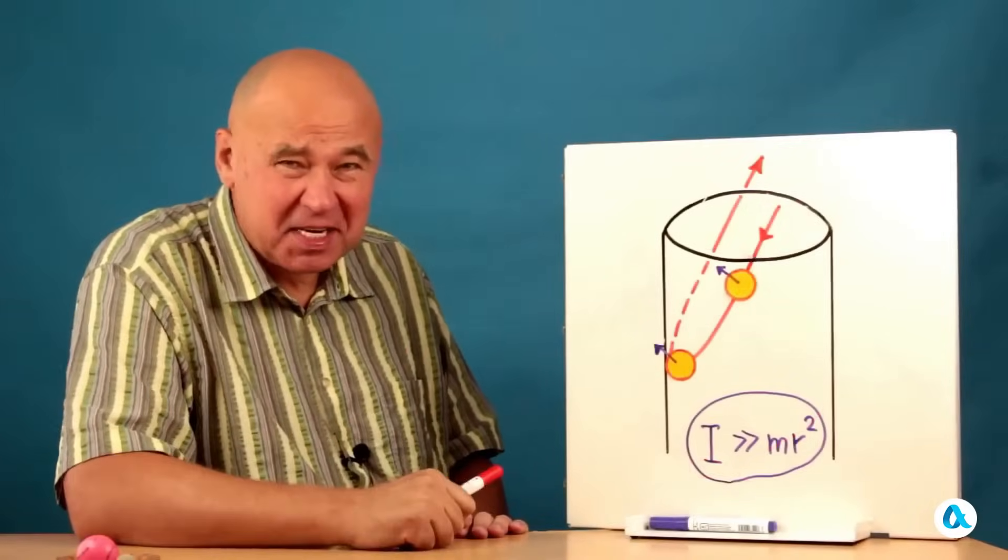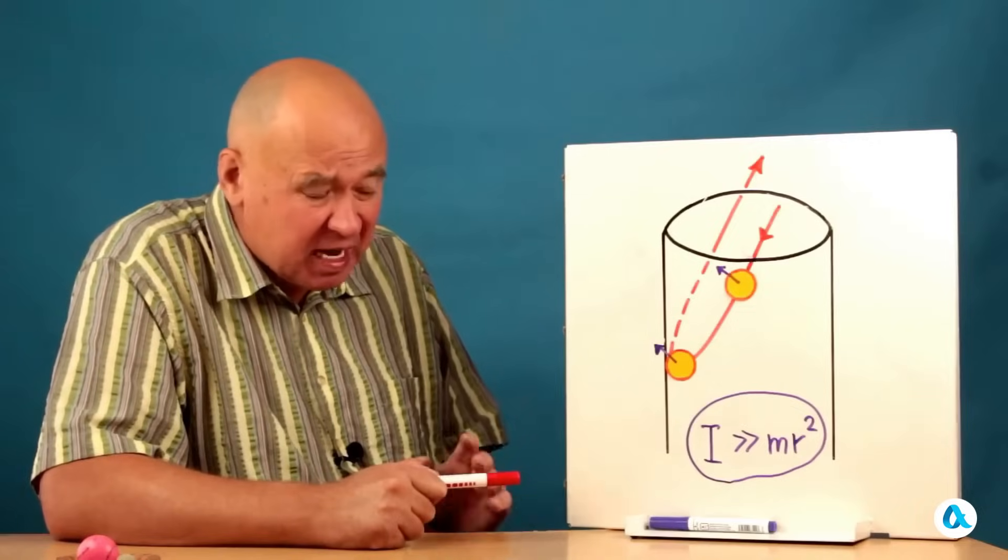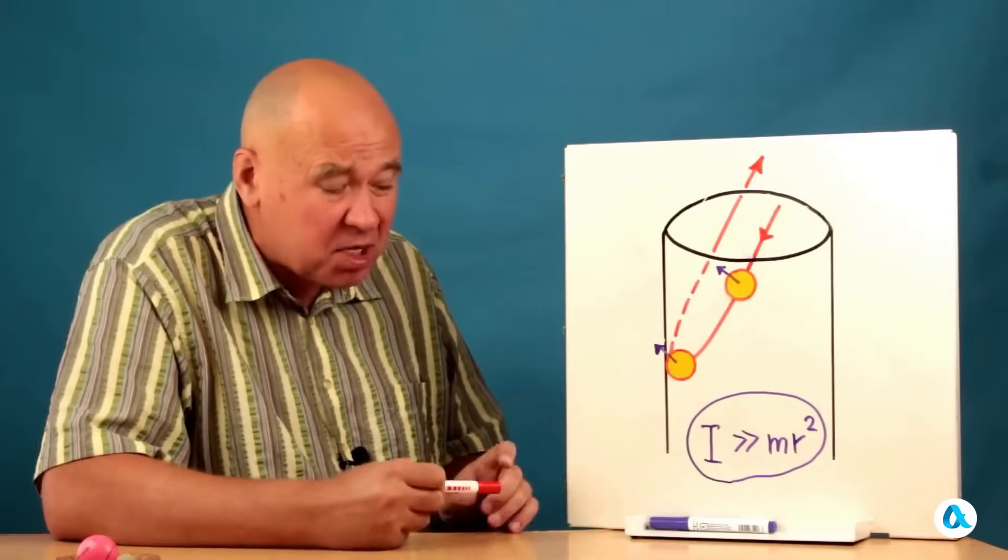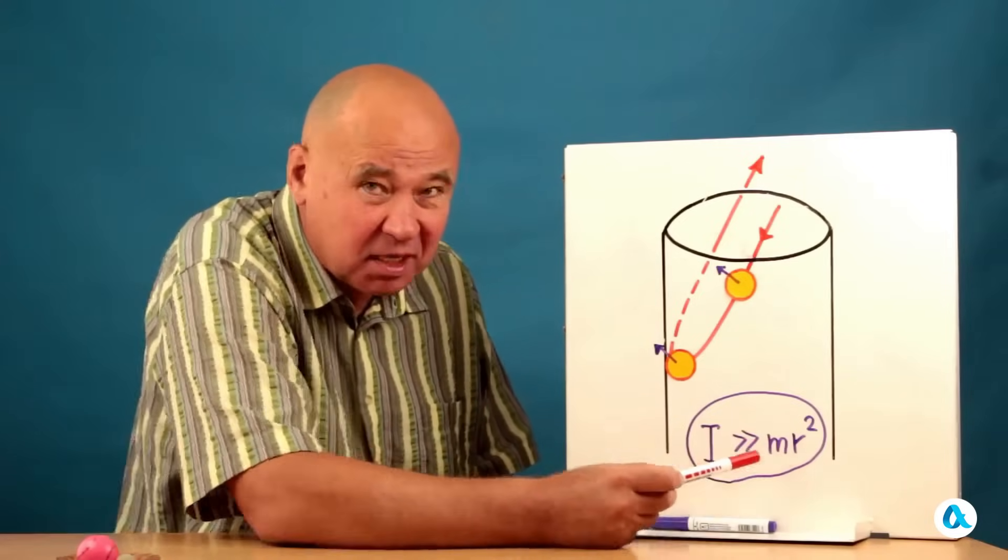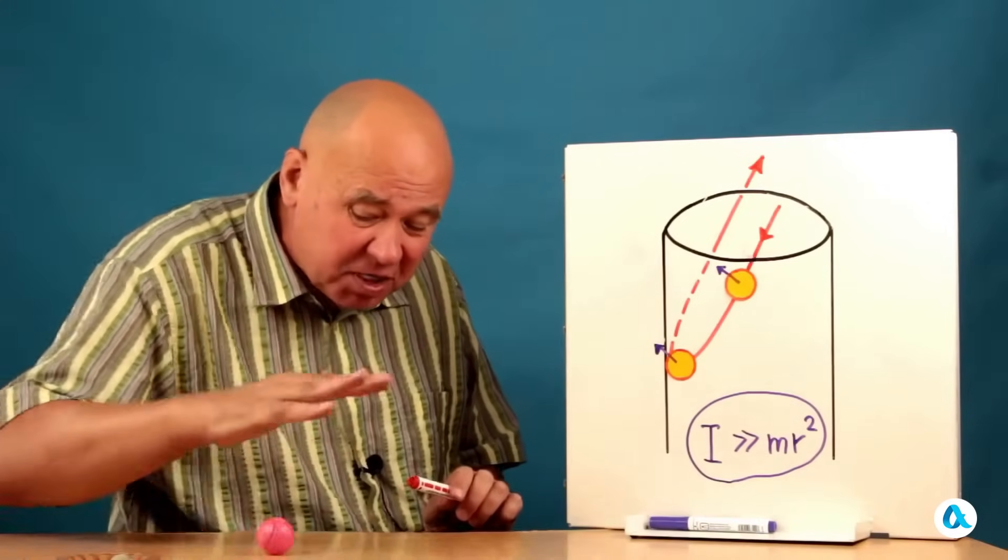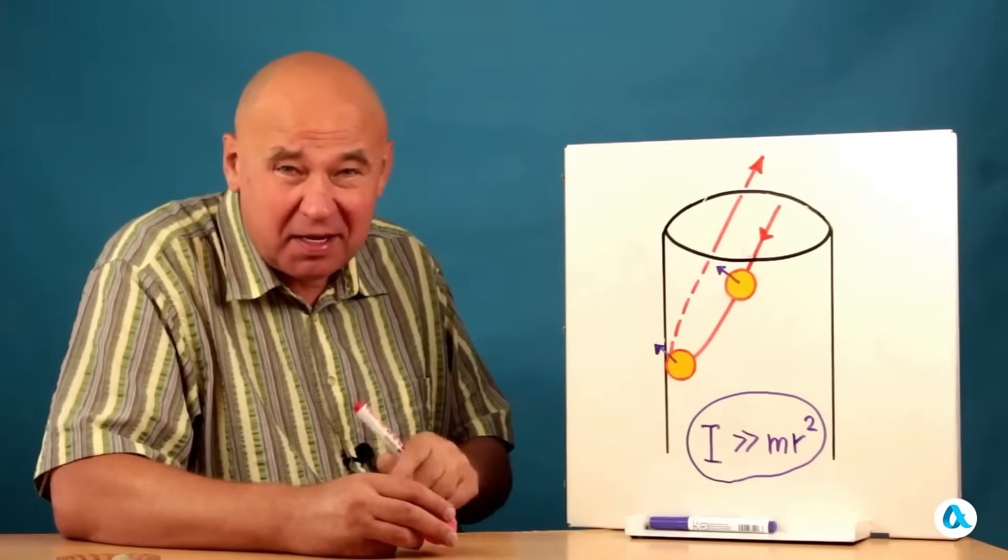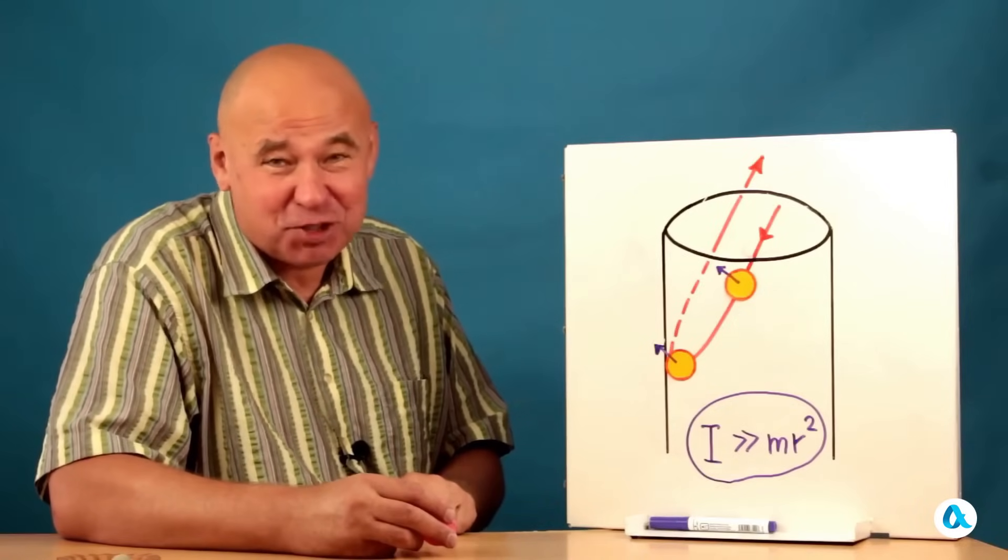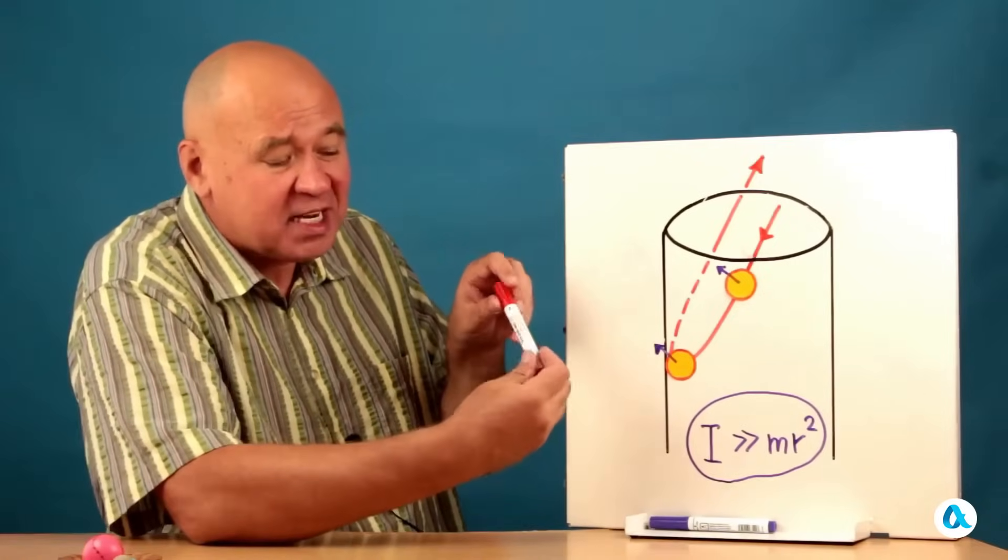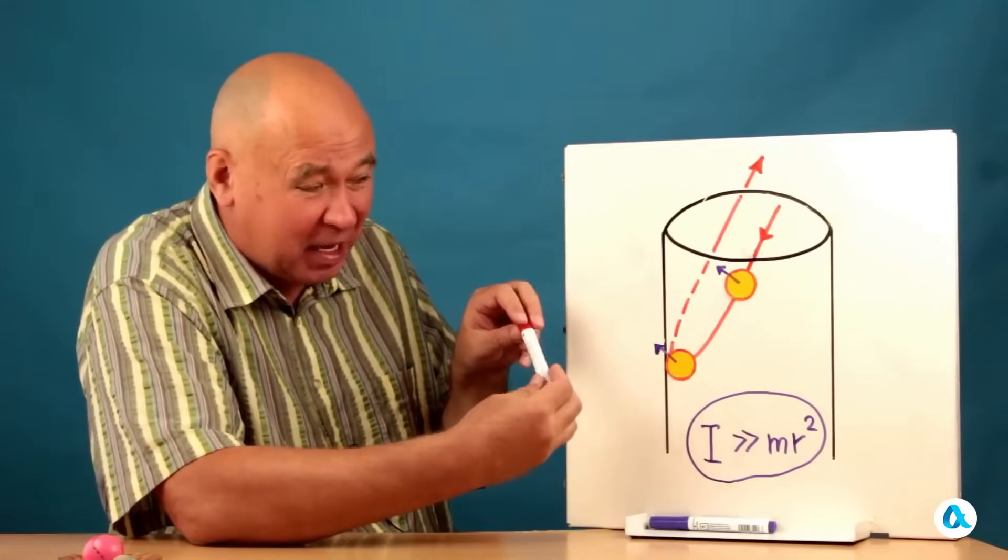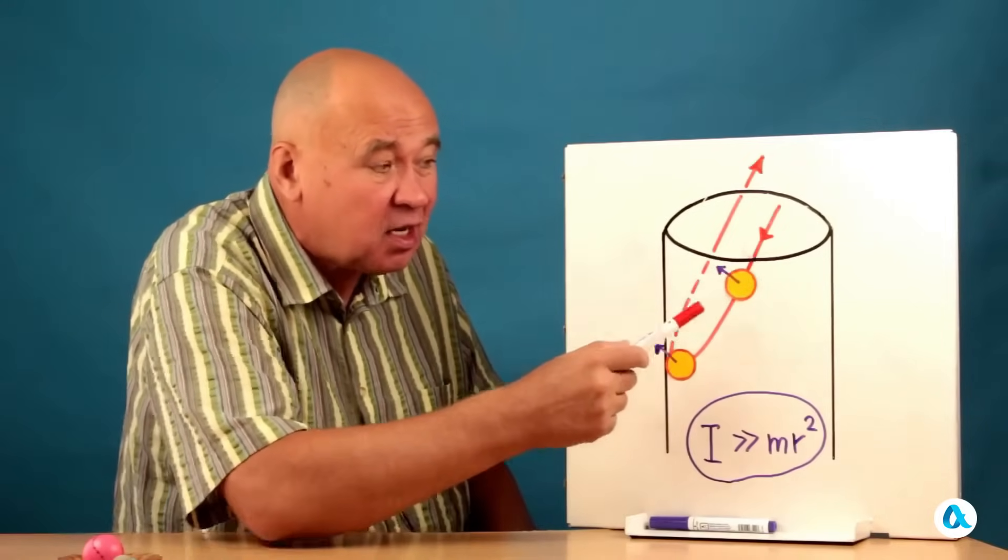Then Steve suggests we imagine such an imaginary ball, which has a moment of inertia much greater than the product of its mass and the square of its radius. That is, such a ball, during the movement of which practically all the energy, when rolling, would be rotational kinetic energy, while the translational kinetic energy would be negligible compared to this energy. And such a ball will maintain its direction of rotation, its axis of rotation as it was, when it got caught on the wall here, will remain the same.